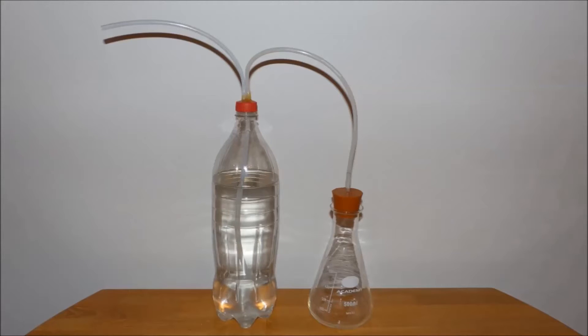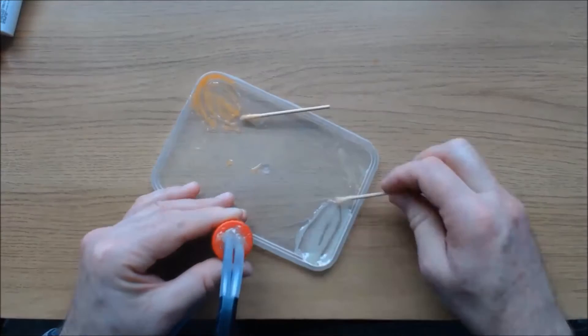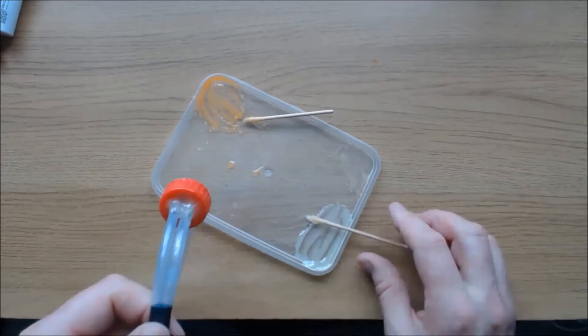The longer of the two pipes should reach the bottom of the soda bottle and that's the one that connects to the stopper on the heat proof flask. Next we glue the pipes in place using epoxy adhesive.